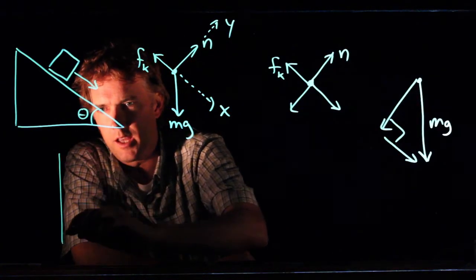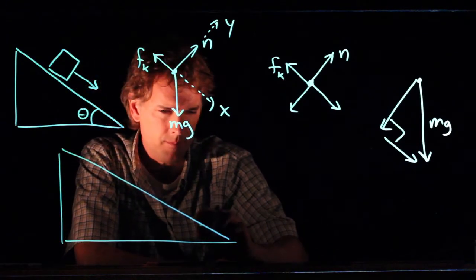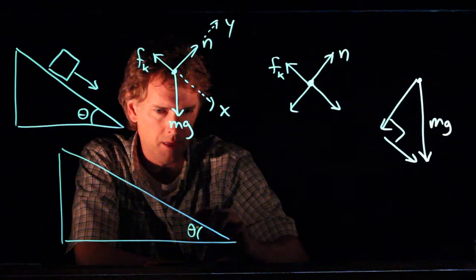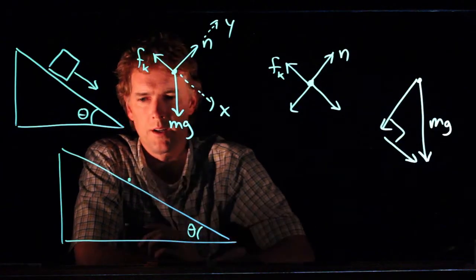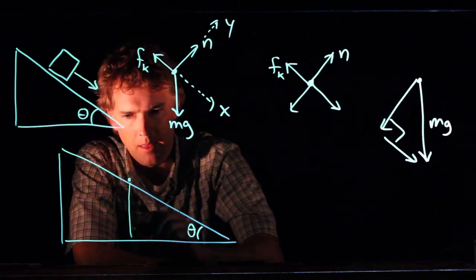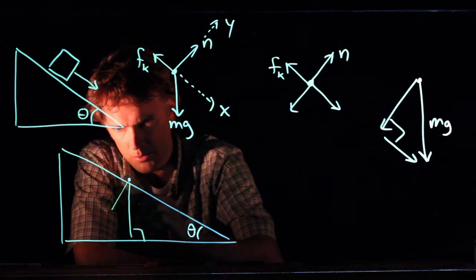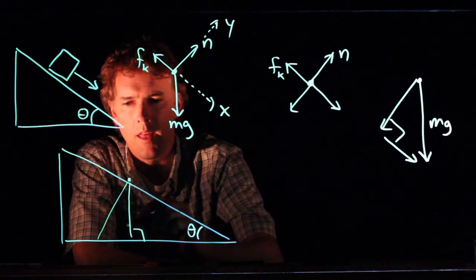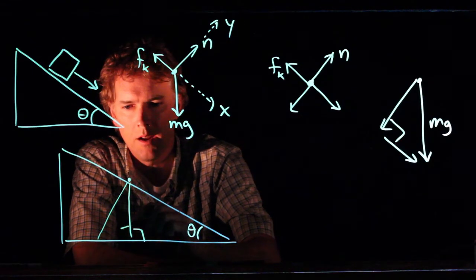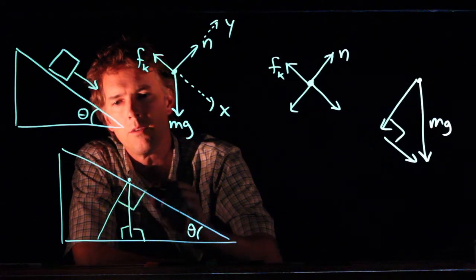So let's draw the triangle again, a little bit bigger. And now this is our angle theta. Here's my object. If I draw a line straight down, then that's a right angle. And if I draw a line normal to the surface, then this is a right angle, but also this is a right angle.